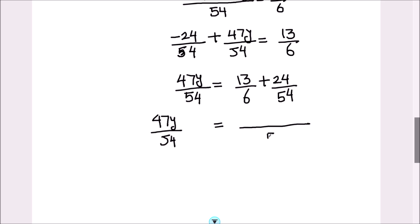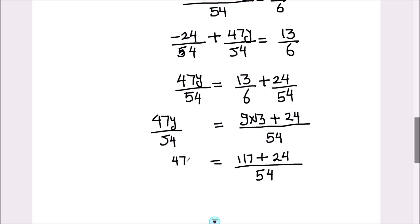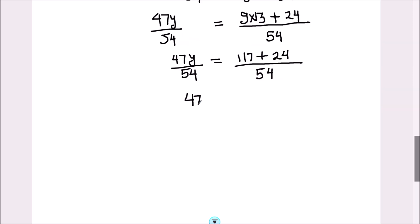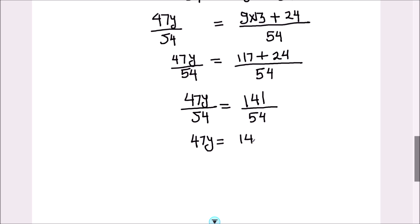The LCM of 6 and 54 is 54 — 9 times 6 is 54 — so that's going to be 9 times 13 plus 24 on the right hand side. 9 times 13 is 117 plus 24, divided by 54. So we have 47y upon 54 equals 141 upon 54, or 47y equals 141 upon 54 times 54. The 54s cancel and we have 47y equals 141.